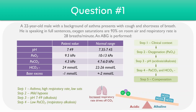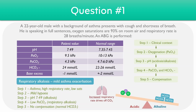For the final step, we can see if there's any compensation present by looking at the other metabolite, which is the bicarbonate. The bicarbonate is within the normal range, so there's no compensation present. Piecing all of this together, this patient is having a respiratory alkalosis as a result of a mild asthma exacerbation.